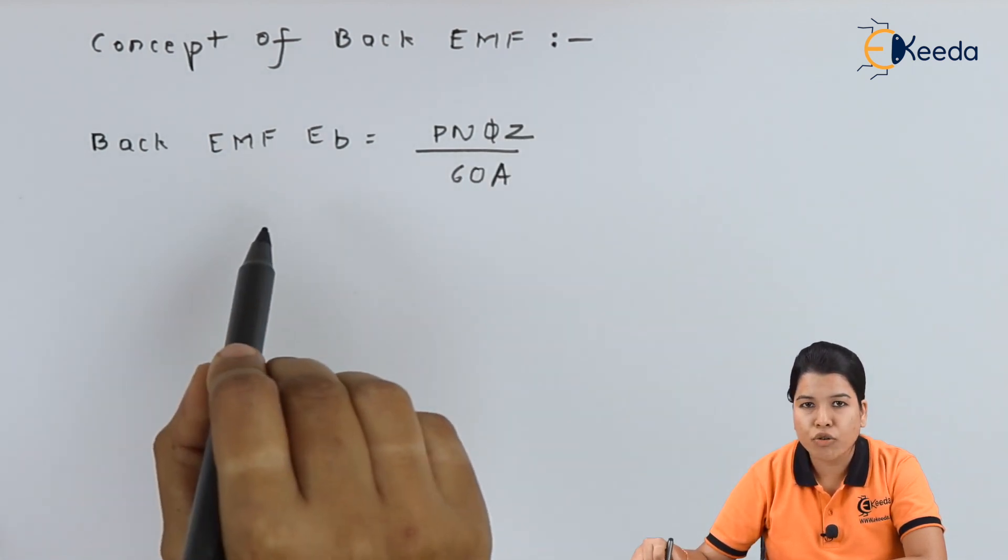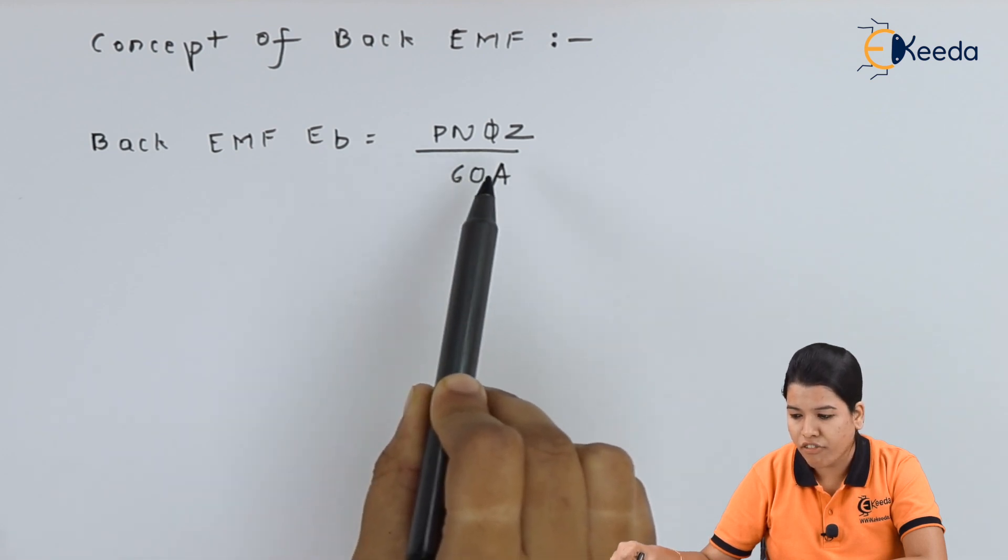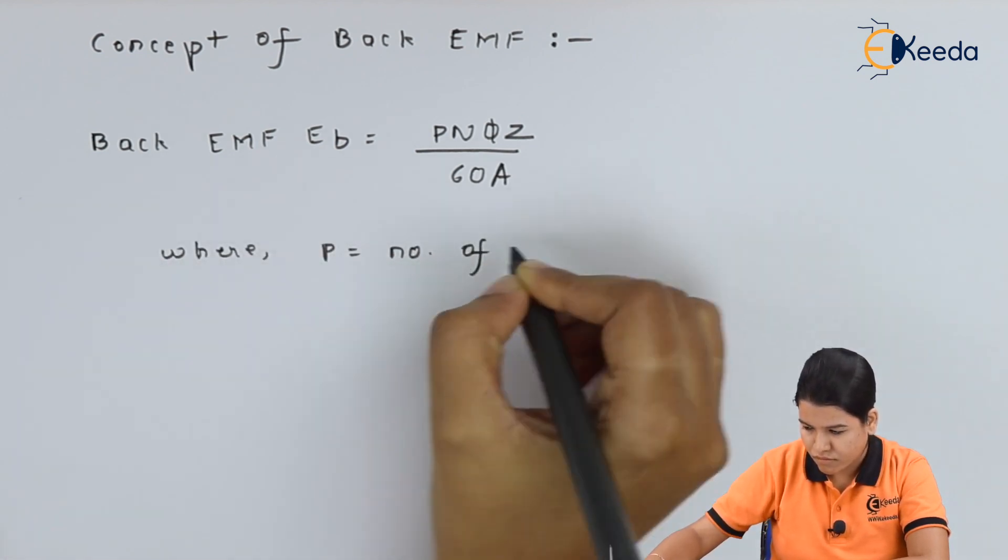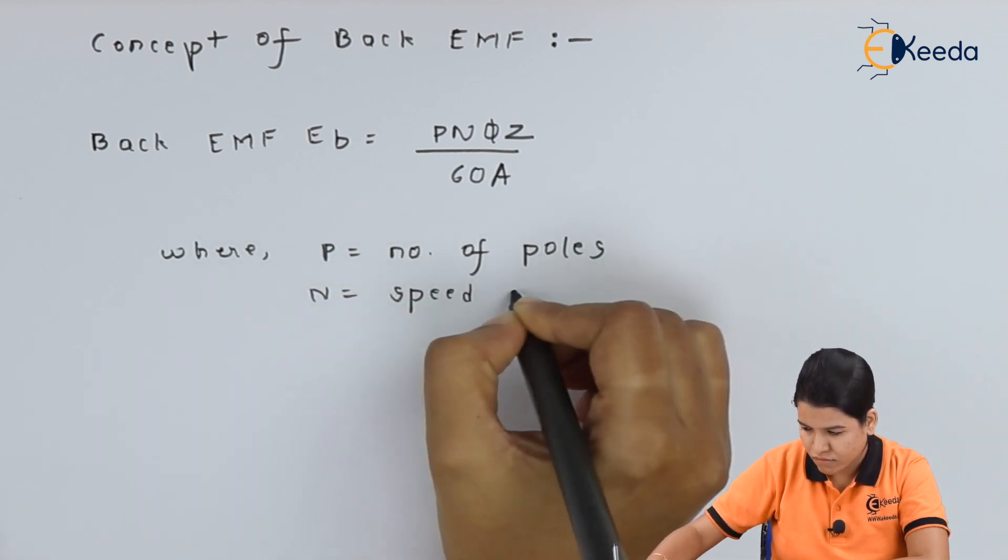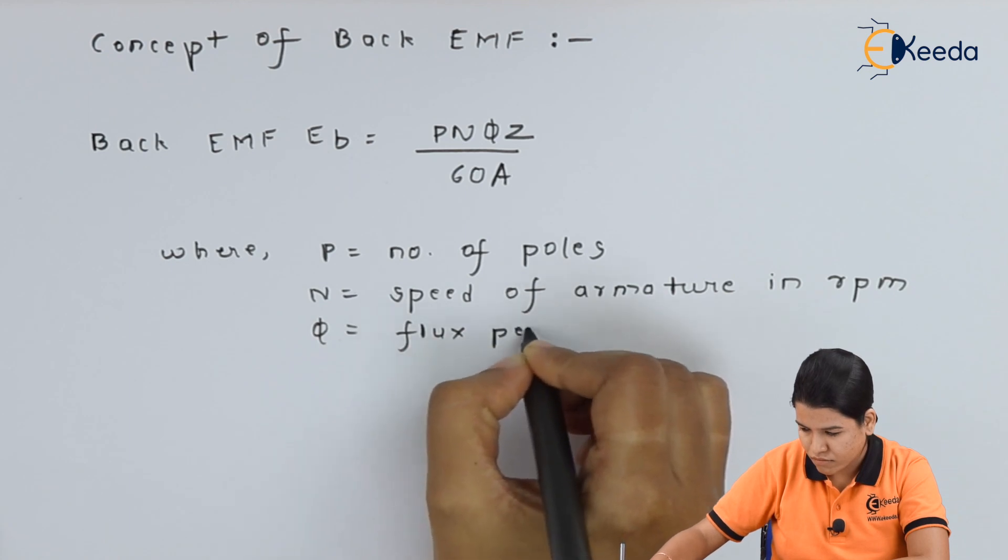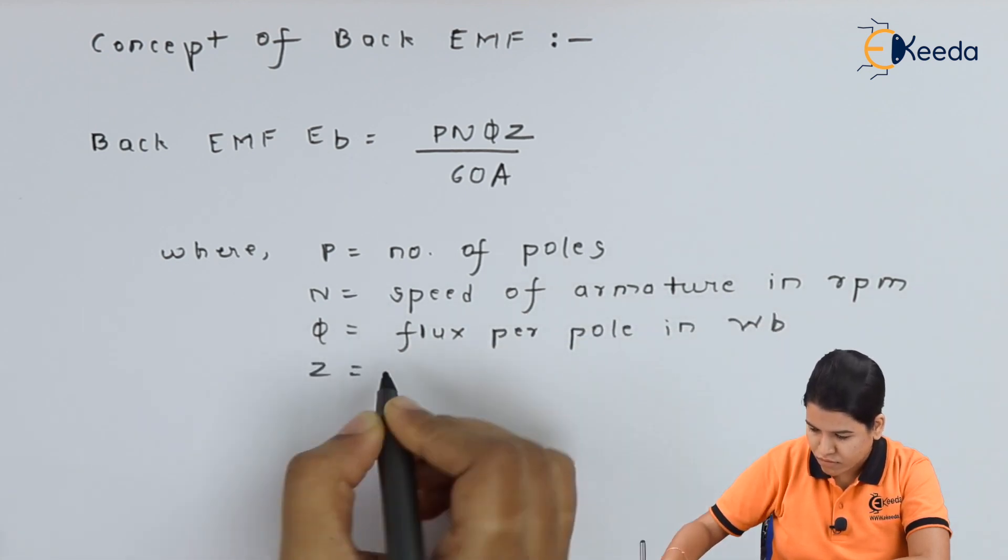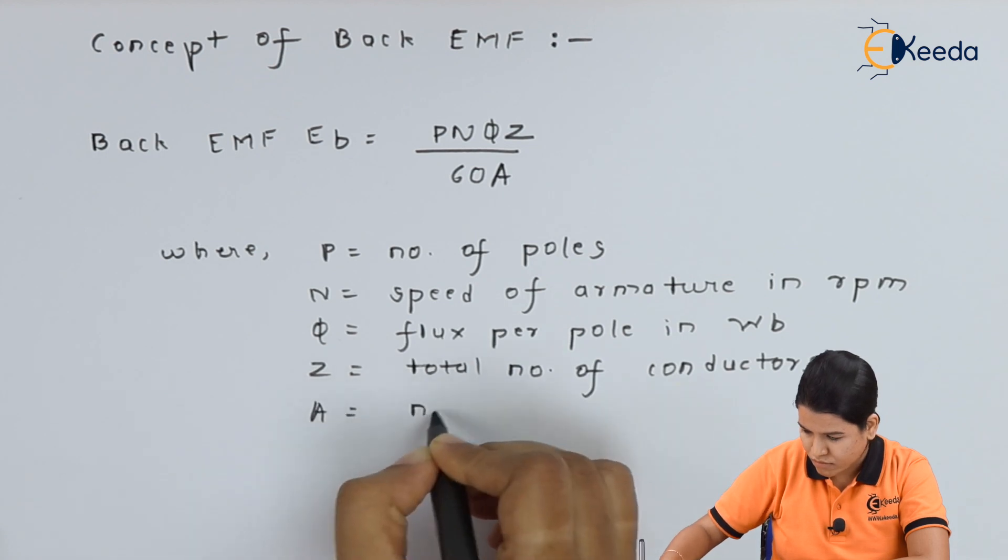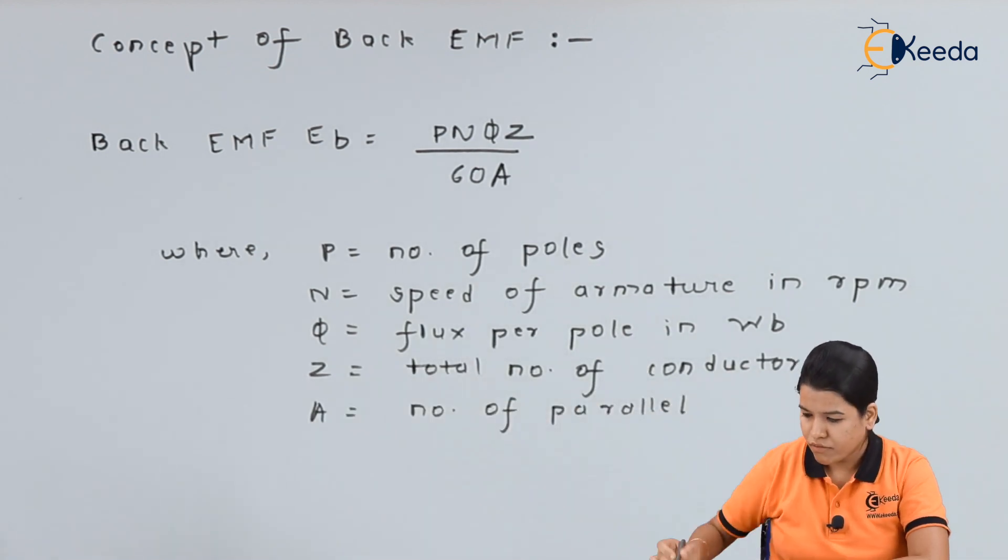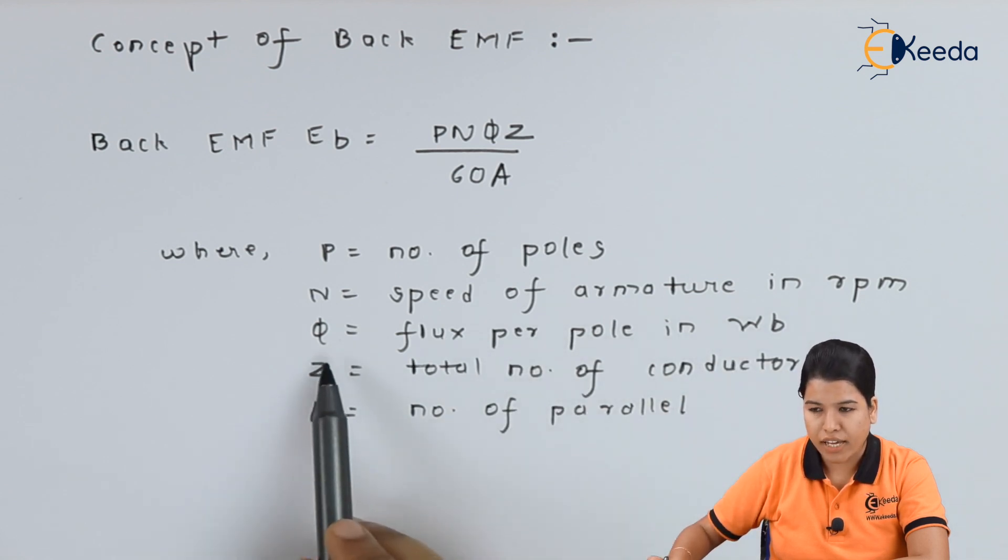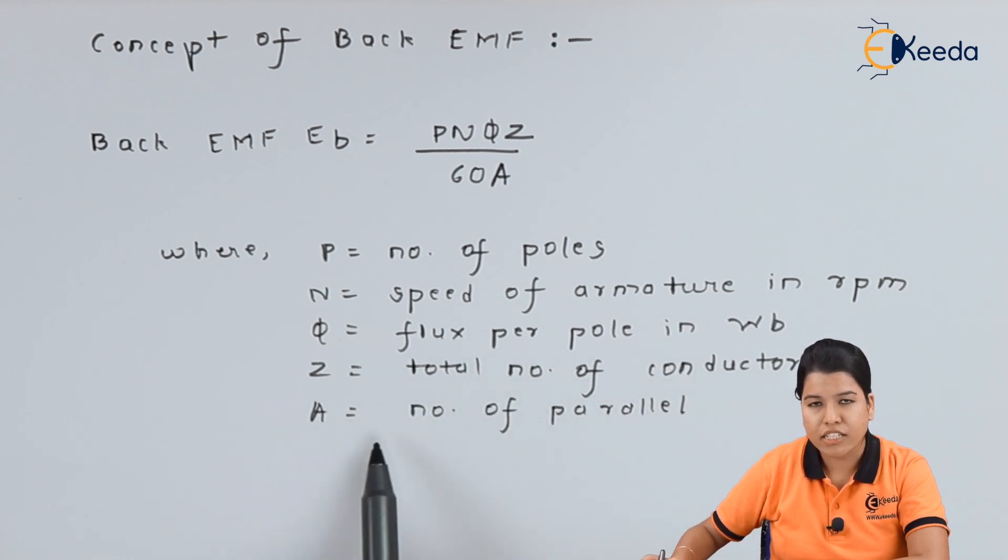Back EMF, denoted by Eb, is equal to P N phi Z divided by 60A, where P is equal to number of poles, N is equal to speed of armature in RPM, phi is equal to flux per pole in Weber, Z is equal to total number of conductors, and A is equal to number of parallel paths.